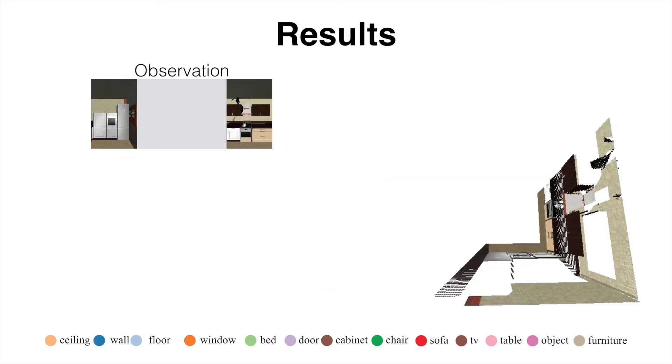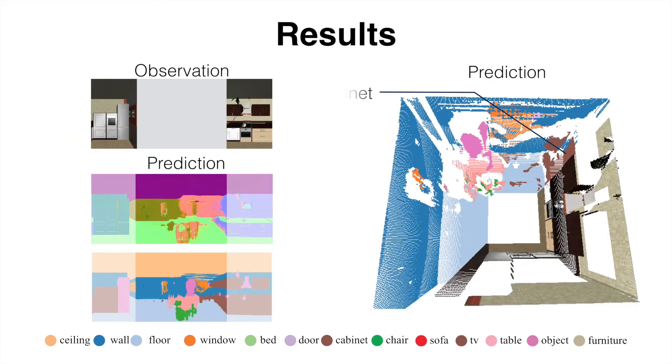Here is an example of a dining room from the SunCG dataset. The network is able to predict the rough locations of a table and the chairs surrounding it.